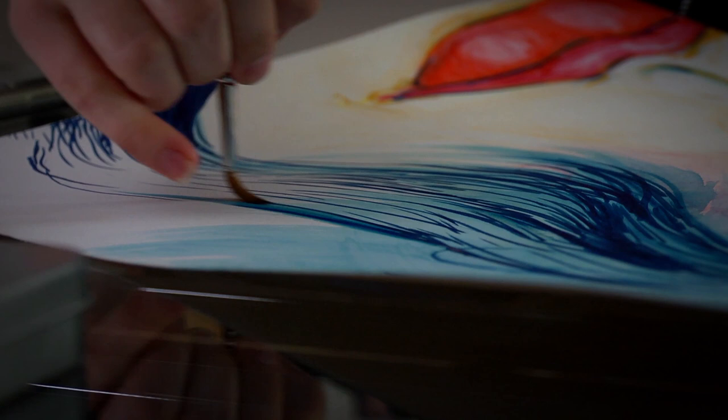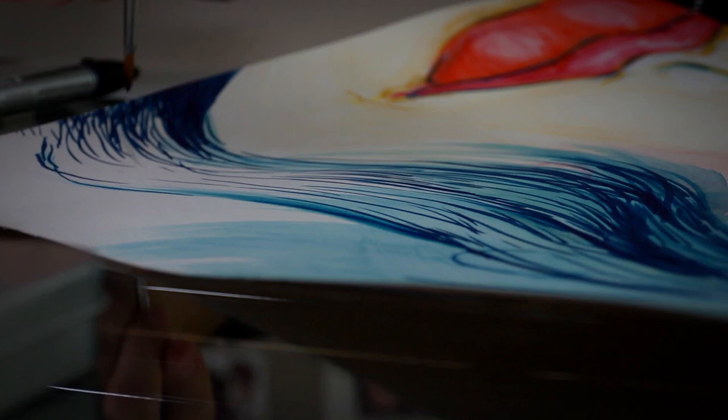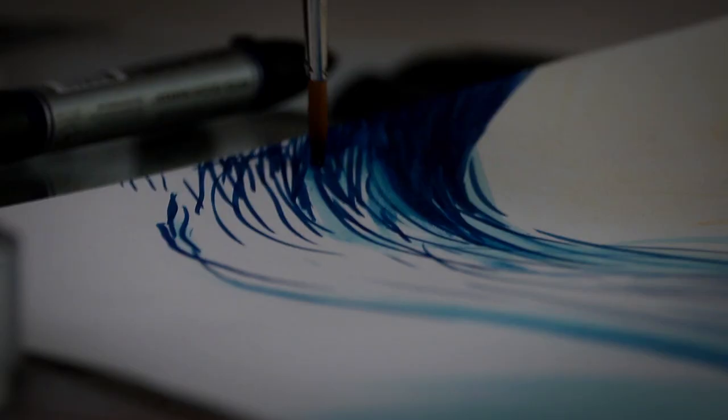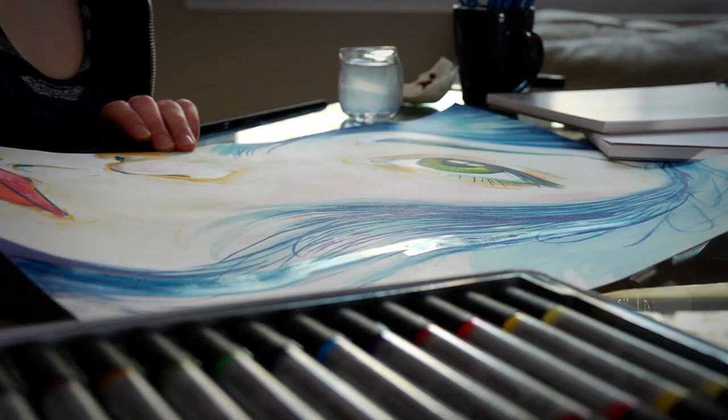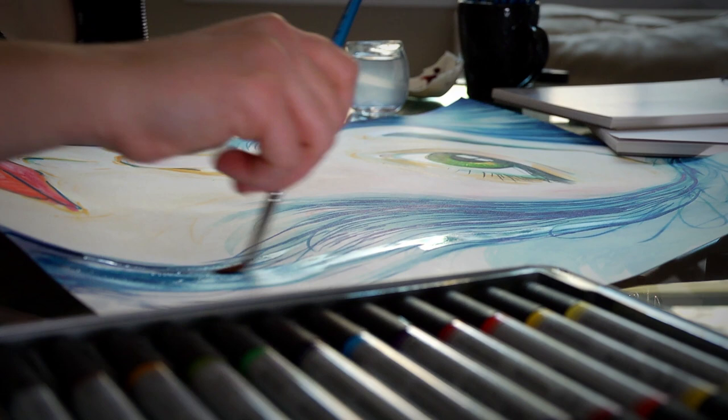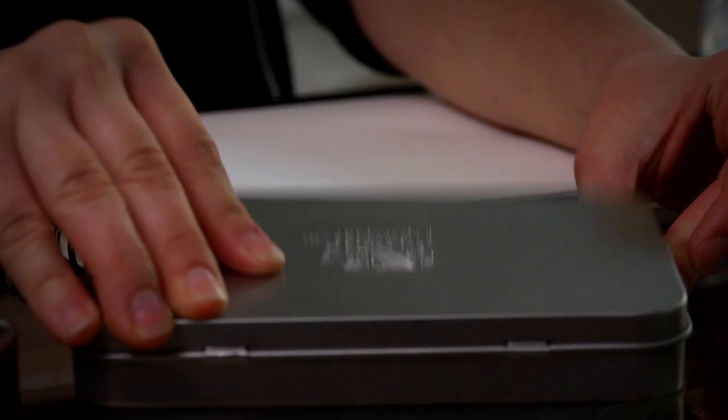So the Winsor & Newton watercolor markers, if an artist is used to using an alcohol-based illustration marker like the Prismacolor markers or Copic or the Blick Studio illustration markers, these are very comparable to those markers. The marks that they make, their blendability, but the biggest benefit is that instead of using a blender pen, you can always just use water to blend it.